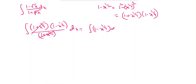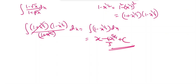The expression reduces to integration of (1 minus x^(1/4)) dx. Integrating: x minus x^(5/4) times 4/5 plus c. This is the answer.